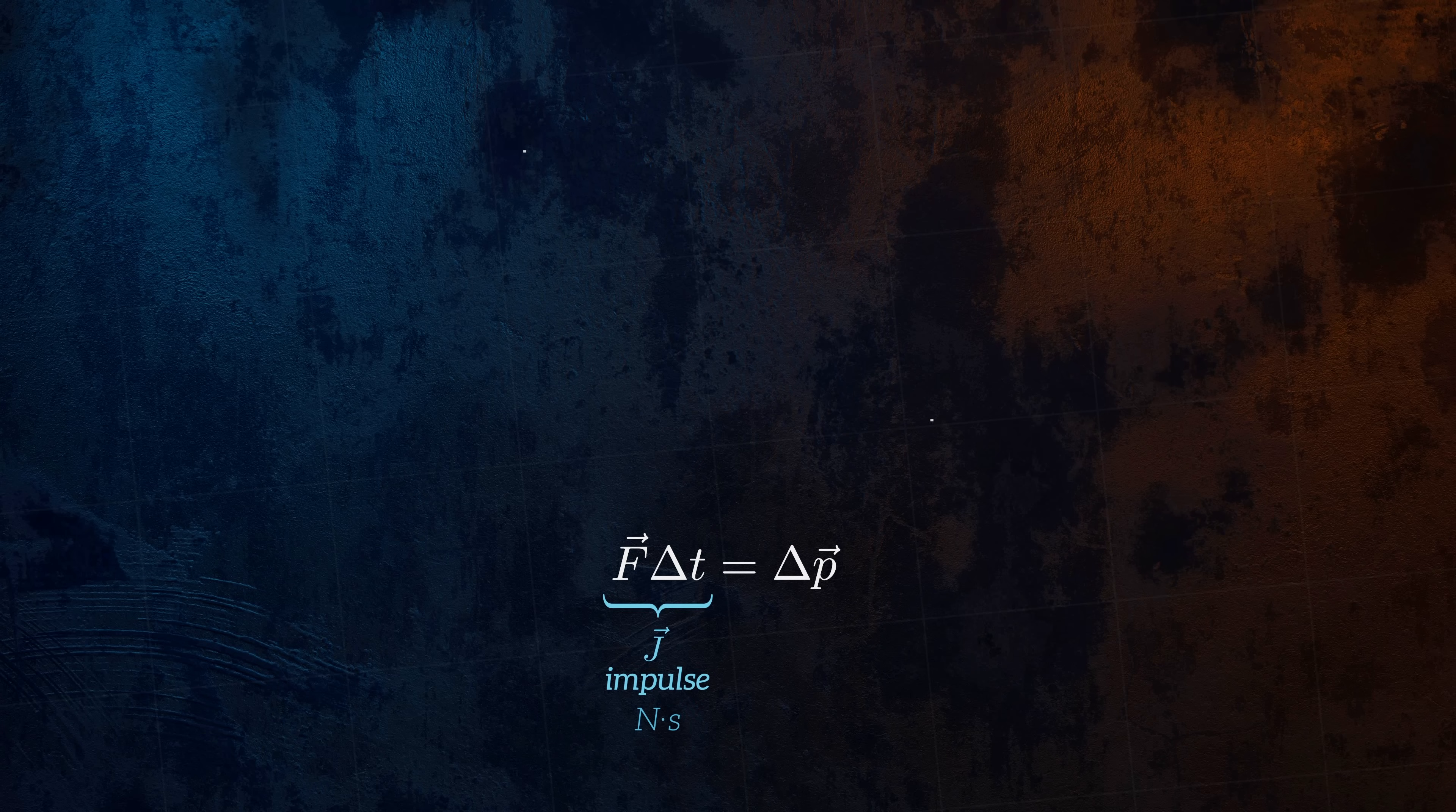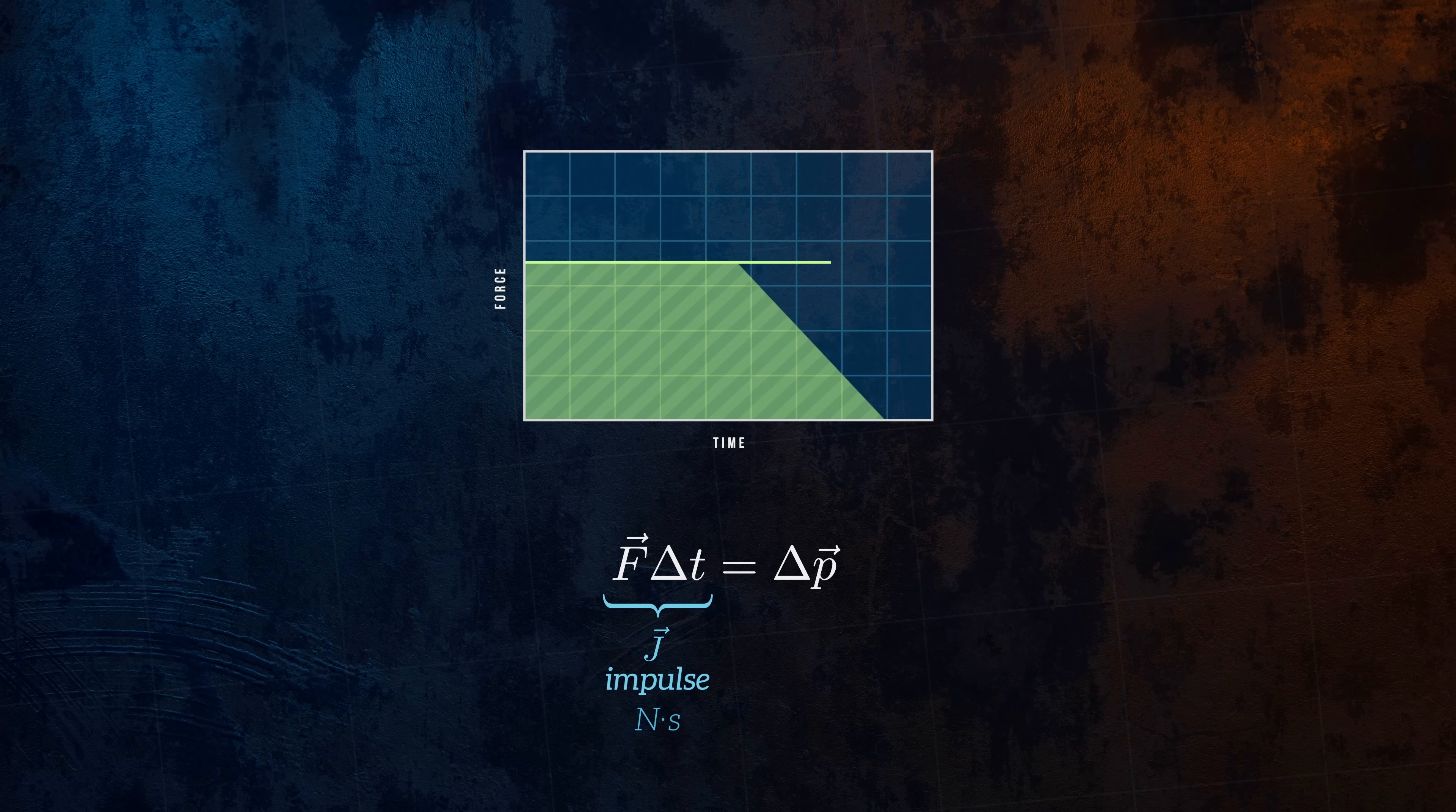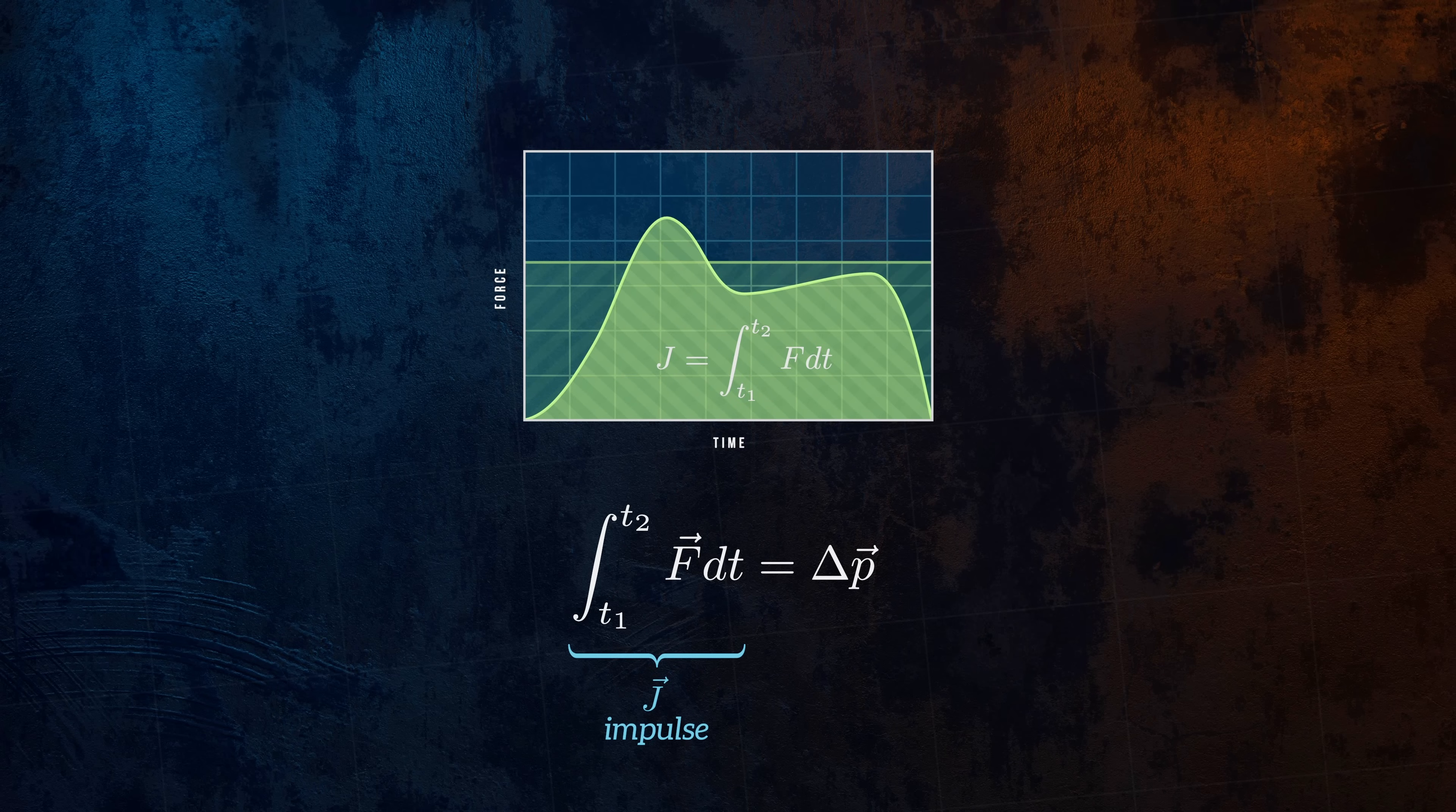The impulse generated by a force is equal to the area under the force versus time curve. It's equal to the product of the applied force and the time period delta T, but only when the applied force is constant over that time period. For a more general case where the force varies with time, impulse is calculated by integrating the applied force over the time period over which it acts.